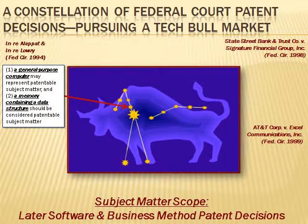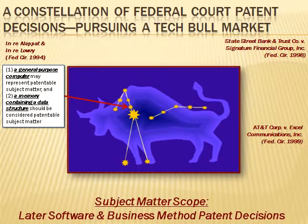That same year, the Court of Appeals for the Federal Circuit decided Enray Lowry, which addressed the patentability of a memory containing a data structure. In reversing the decision of the U.S. Patent and Trademark Office, the Federal Circuit held that the printed matter exception applies only to printed lines of characters useful and intelligible only to the human mind.